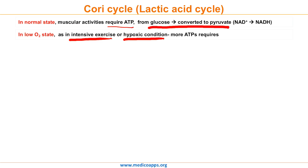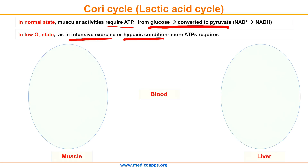Let's start the cycle by understanding how it works and where it occurs. If oxygen levels are low, more ATP is required by the muscles, which means more glucose is required. The Cori Cycle basically involves muscles, blood, and liver. Glucose comes to the muscle from the breakdown of glycogen by the process called glycogenolysis.